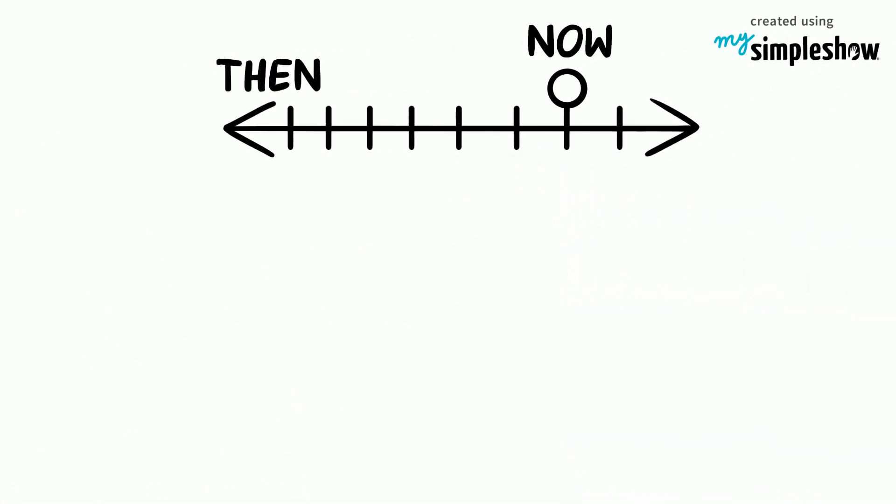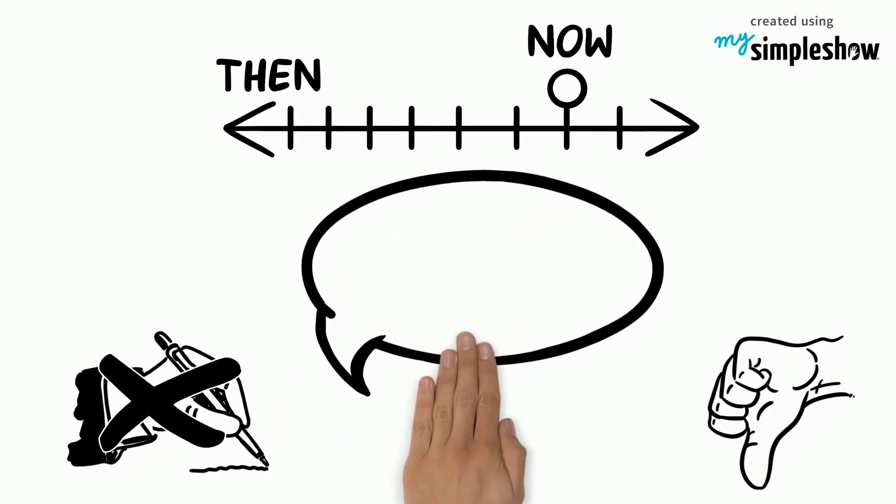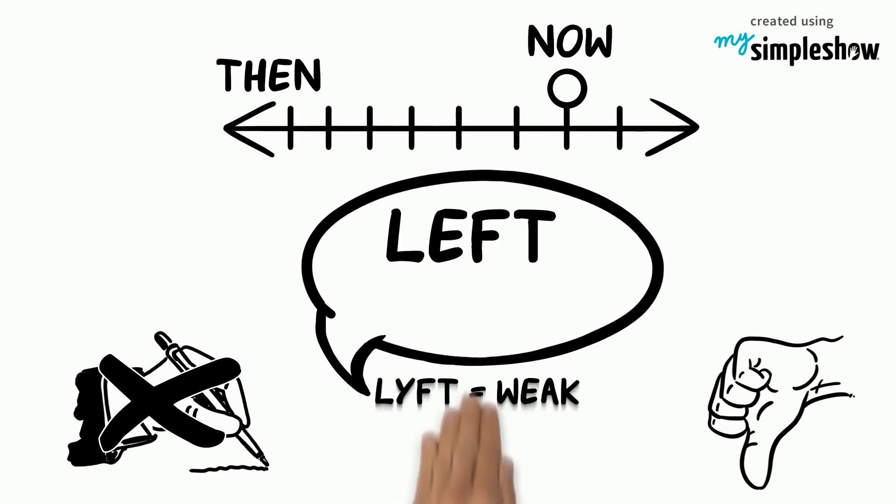History shows that left-handedness was drummed out of errant school children, and even today oddly negative connotations are around. The word left comes from the Anglo-Saxon word left, which means weak. However, that doesn't answer Amelia's question.